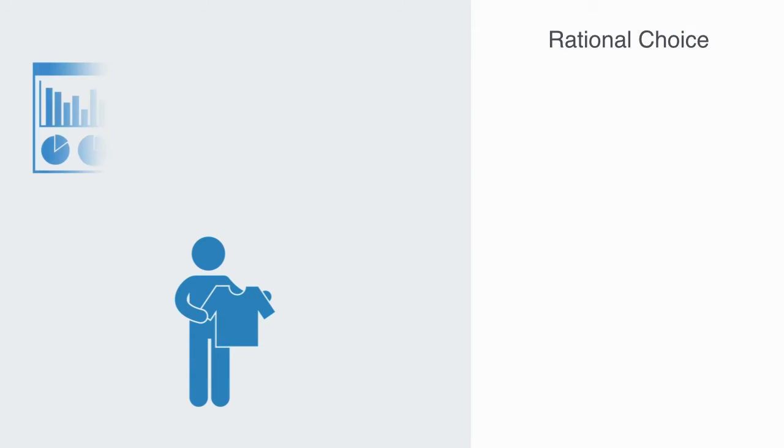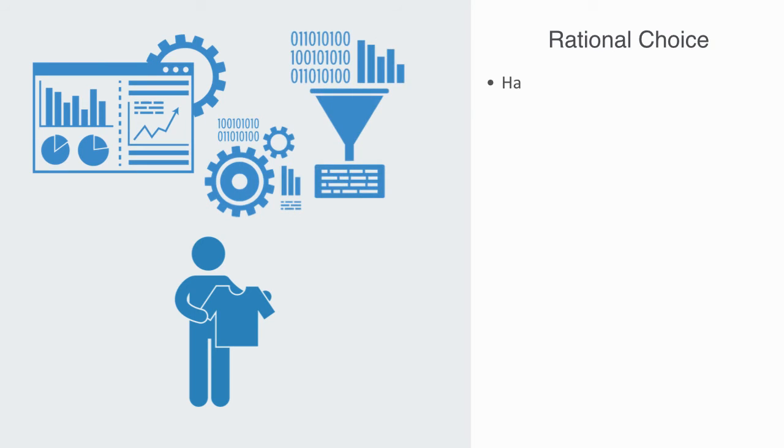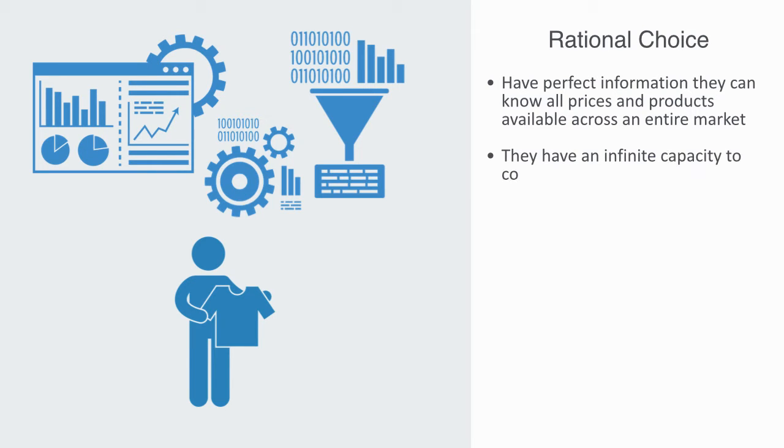The rational choice theory is the idea that economic agents have perfect information both in time and space. They can know all prices and products available across an entire market. They are also perfectly informed of all the events that have previously occurred or will occur in the future through the use of probability.